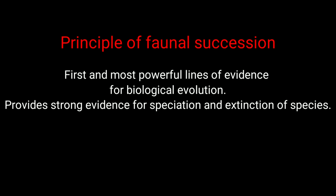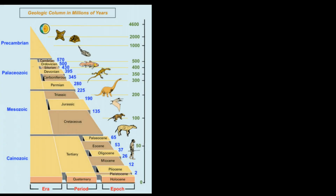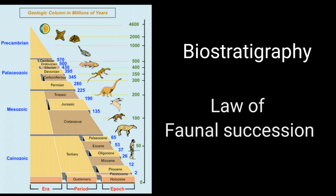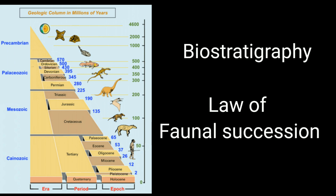The principle was one of the first and most powerful lines of evidence for biological evolution. It provides strong evidence for speciation and extinction of species. The geological time scale was developed during the 19th century based on the evidence of biologic stratigraphy and faunal succession.